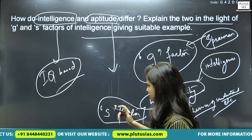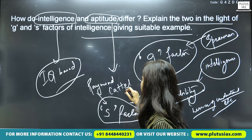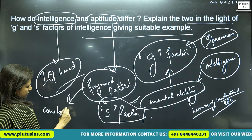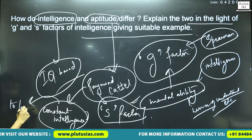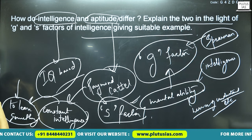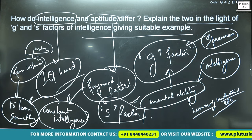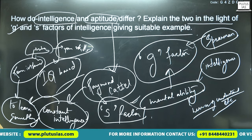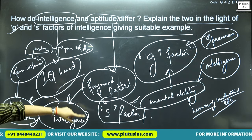For the S factor, you can talk about Raymond Cattell's theory. The S factor means you have a constant intelligence and keen interest to learn something — you have the ability to enhance your skills in a specific area. So G factor is for Spearman and S factor is for Raymond Cattell.